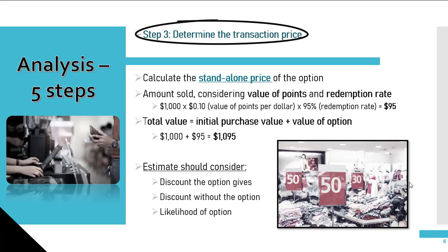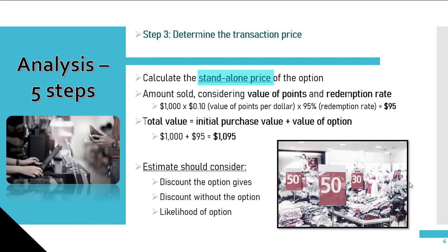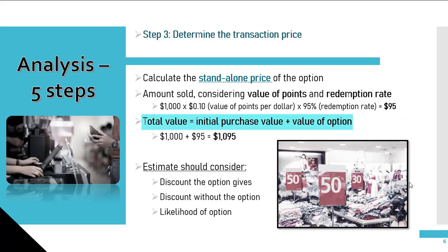Now let's review step three, which is essentially the measurement. First, you must calculate the standalone selling price of the option. This is equal to the amount sold, factoring in the value of points and the point redemption rate. Therefore, it is $1,000 — the value of the sales — times 10 cents for each loyalty point, times the 95% redemption rate, for a value of the option of $95. The total transaction value is equal to the initial purchase plus the value of this option. Therefore, the total value is $1,095.